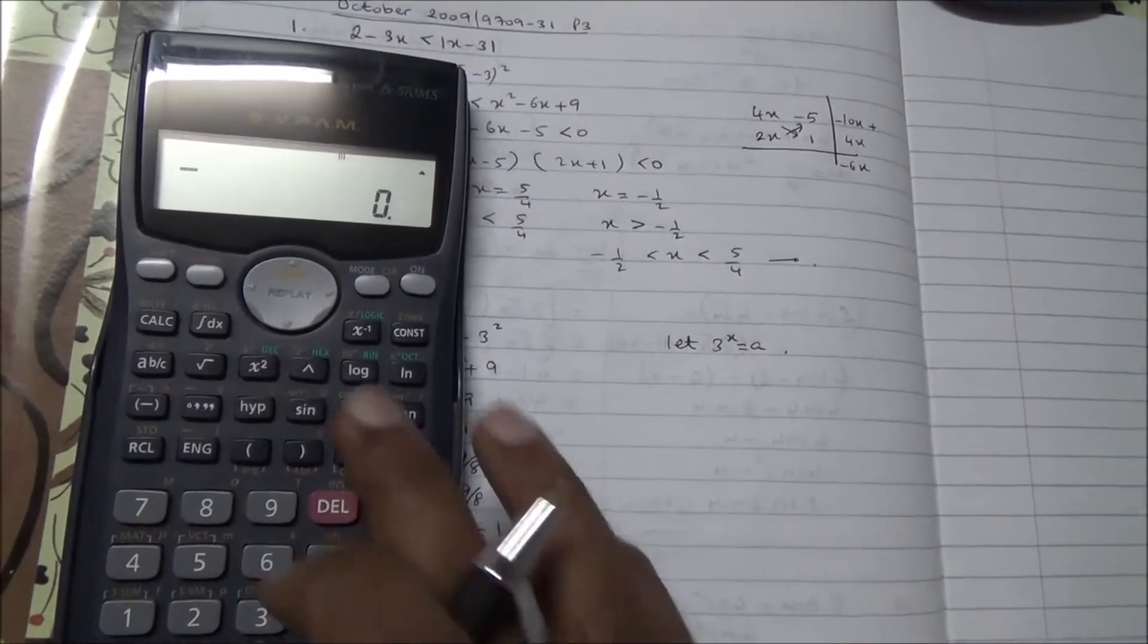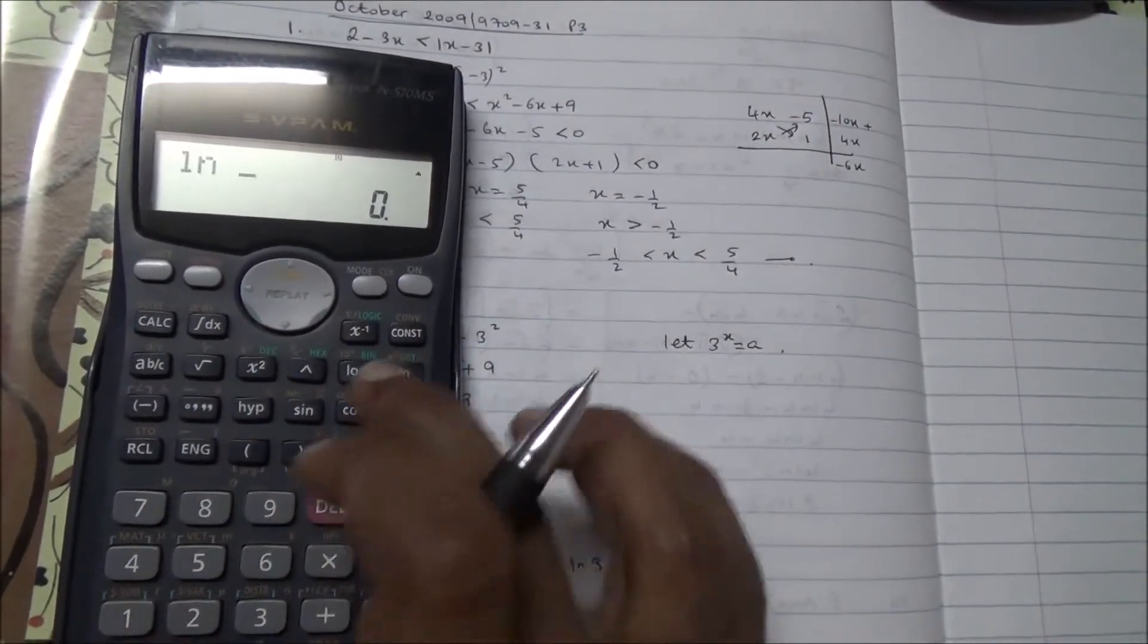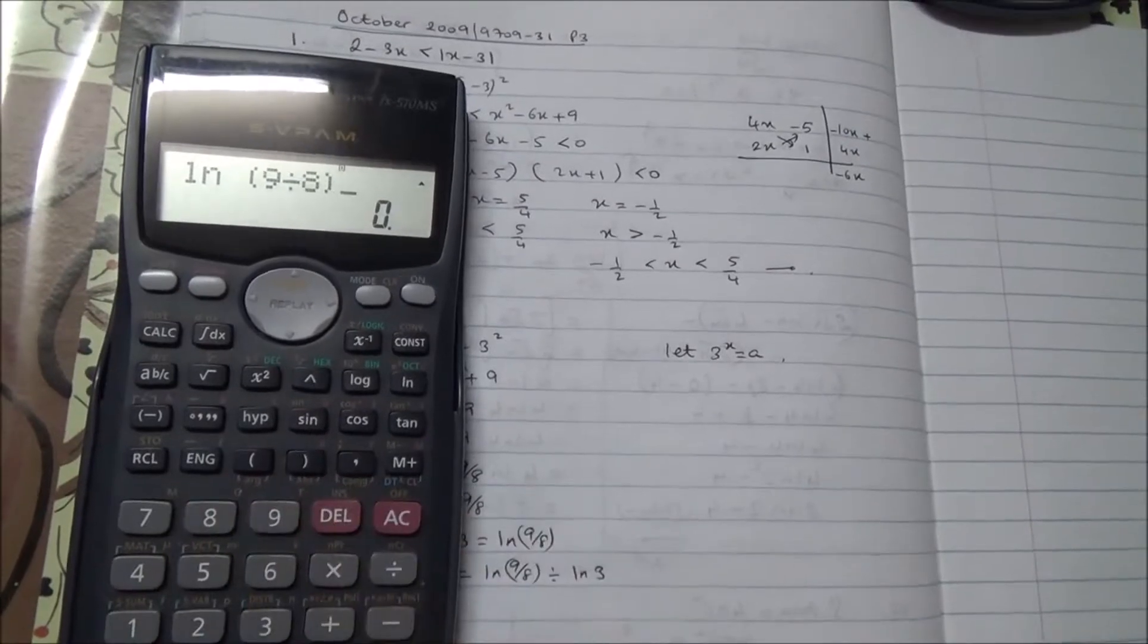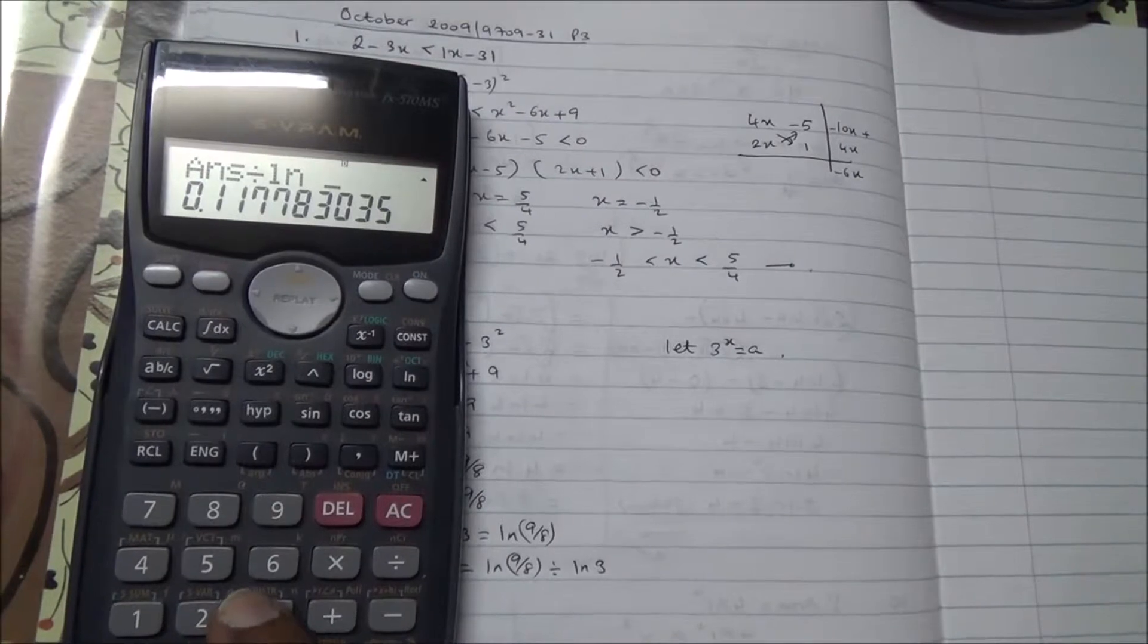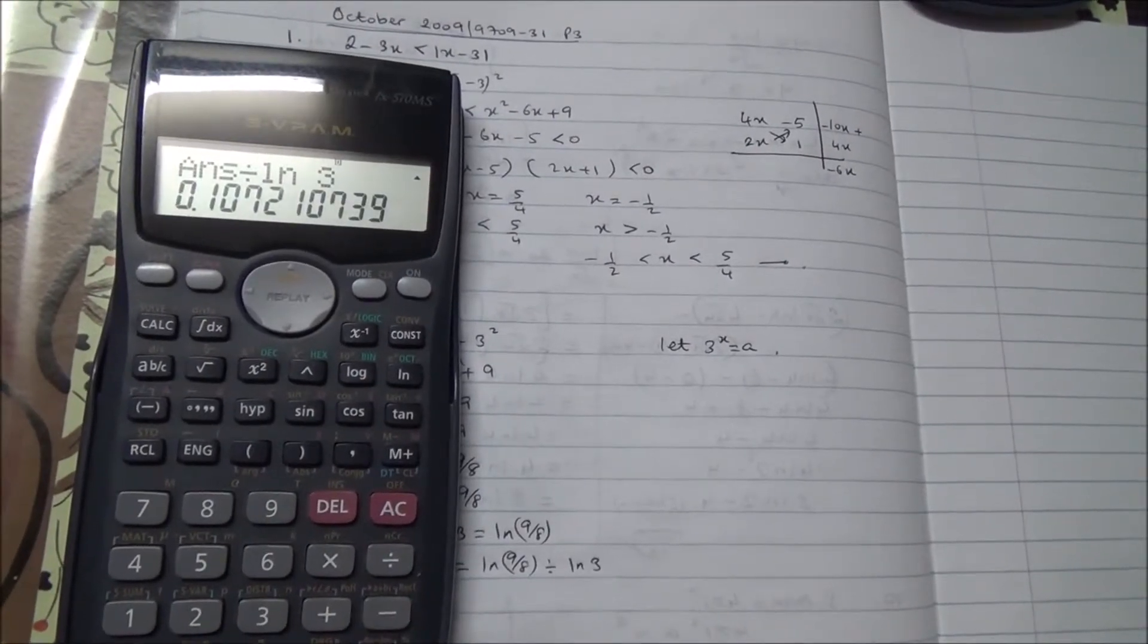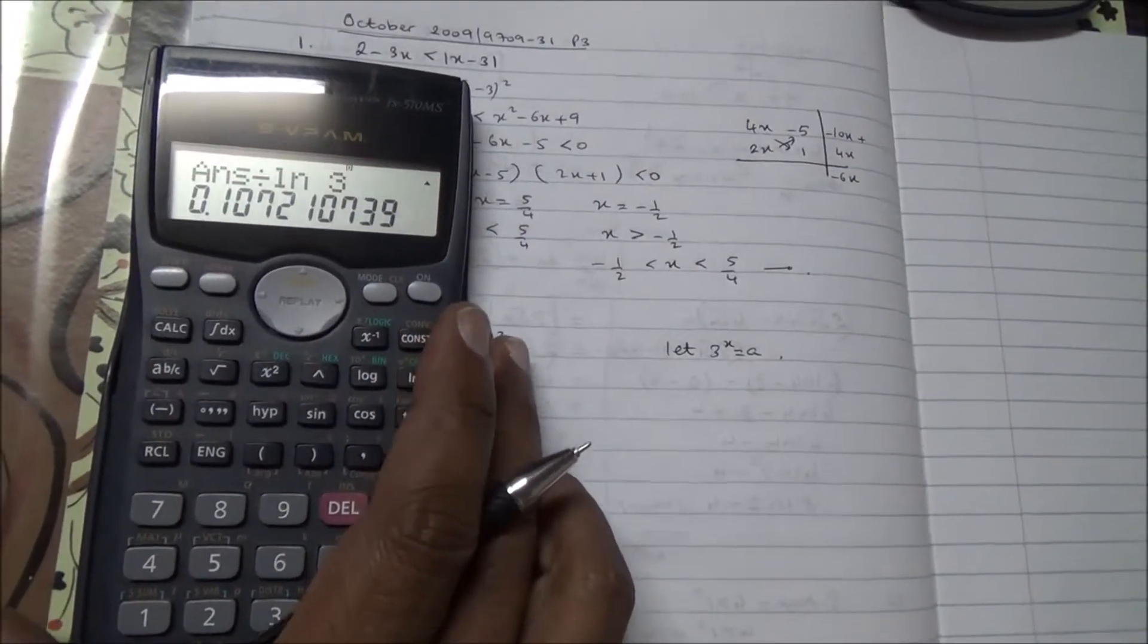Okay, and all of that is going to be divided by ln 3. I'm doing something wrong here. So, ln 9 over 8, put brackets, divided by ln 3. So, 0.107, this is our answer.